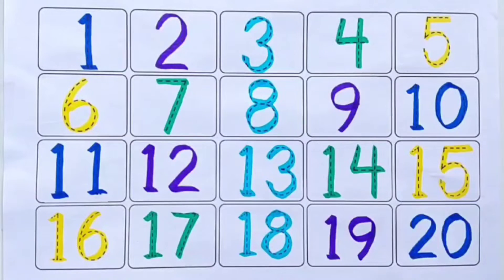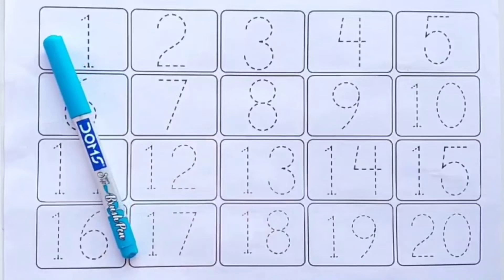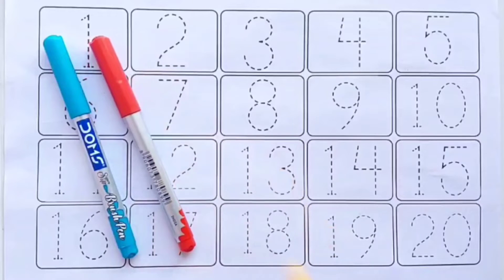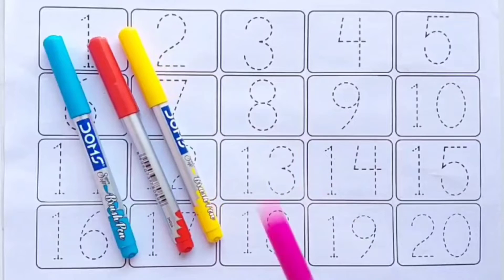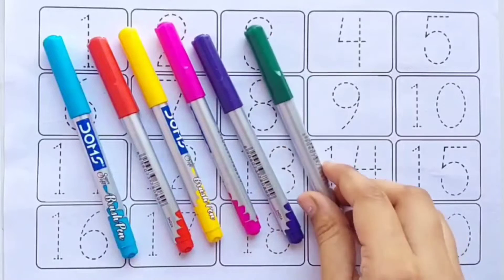Hello kids, let's learn numbers 1 to 20. Sky blue color, red color, yellow color, pink color, purple color, green color.